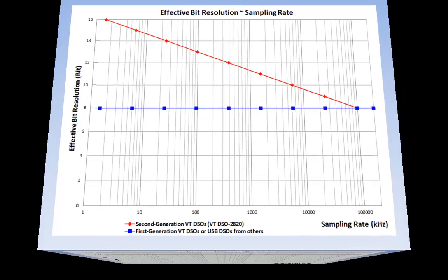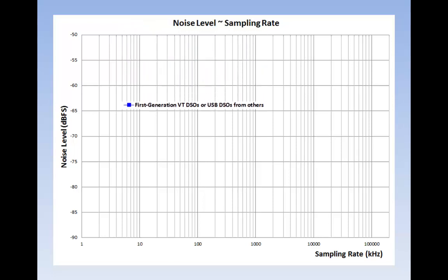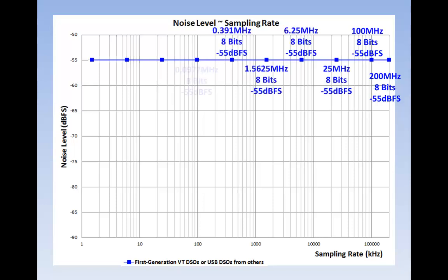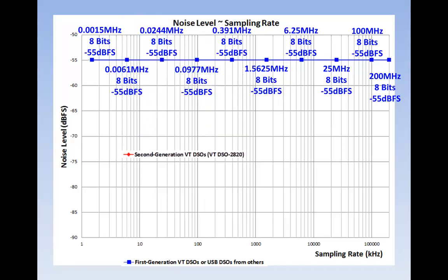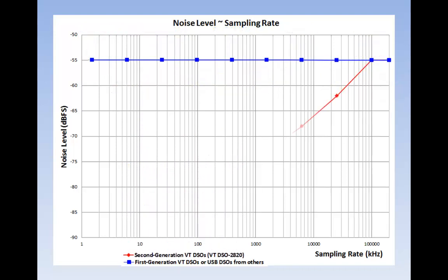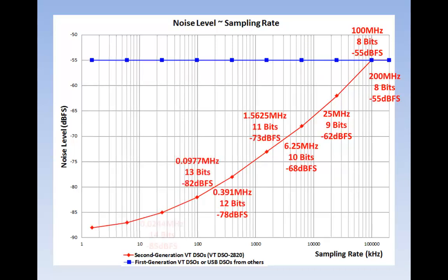The increased bit resolution would have simply increased a few bits of noise if the noise level of the DSO had not been carefully taken care of. This figure shows the variation of the noise level with the sampling rate. For a fixed 8-bit oscilloscope, the noise level is more or less fixed. For a second-generation VT DSO, under its bit enhancement mode, as the sampling rate goes down, the noise level goes down substantially from minus 55 dBFS at 200 megahertz to minus 88 dBFS at 1 kilohertz.